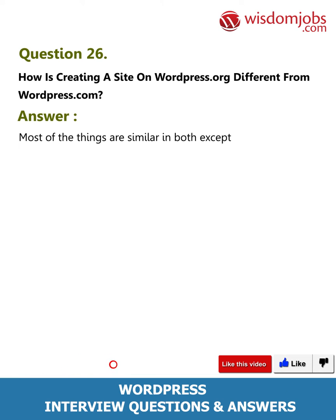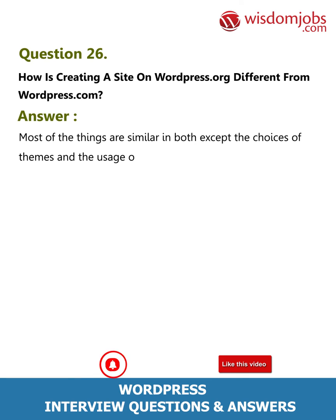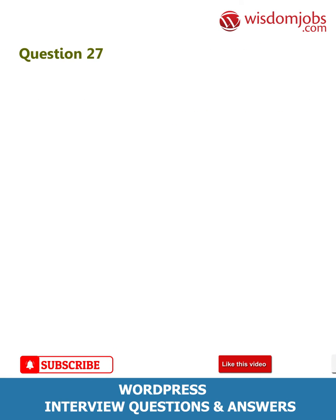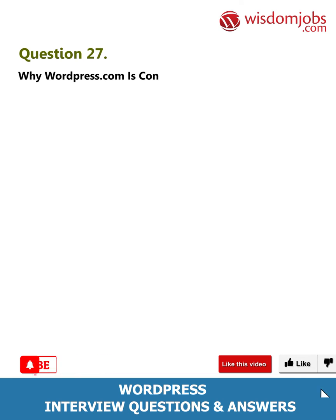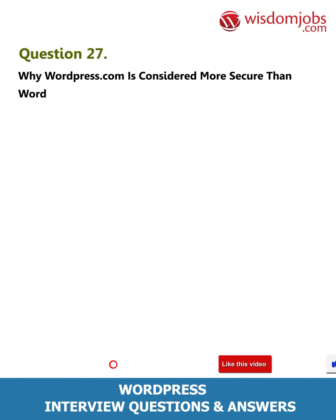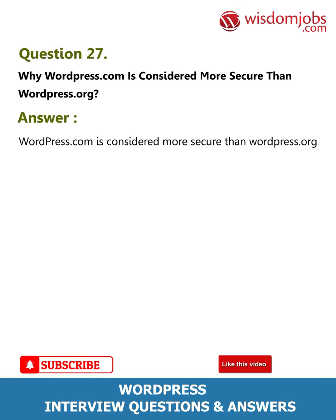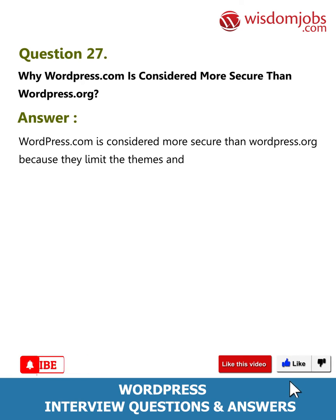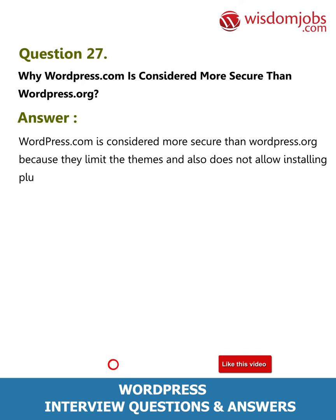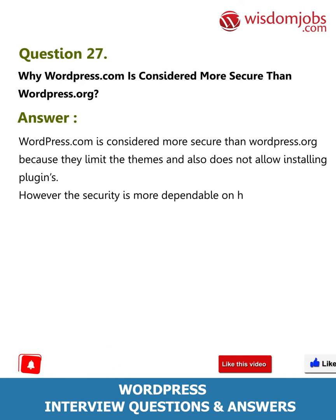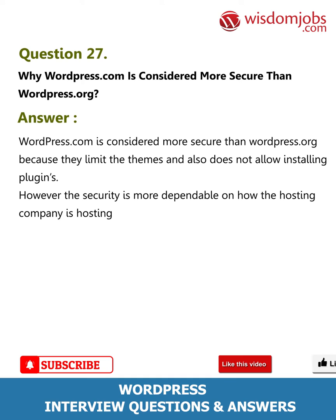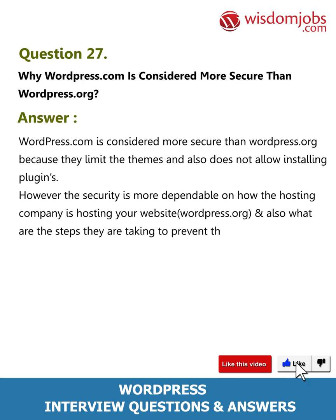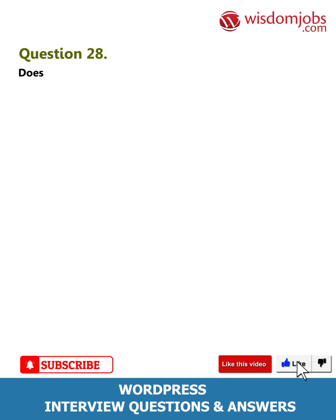Question 27: Why is WordPress.com considered more secure than WordPress.org? Answer: WordPress.com is considered more secure because they limit the themes and do not allow installing plugins. However, security is more dependable on how the hosting company is hosting your WordPress.org site and what steps they are taking to prevent security problems.